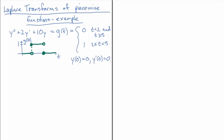The transform equation is going to be s squared times Y of s — that comes from two derivatives of y — plus 2s times Y of s from the single derivative for y prime, plus 10 Y of s. Since the initial conditions are zero, those terms drop out.